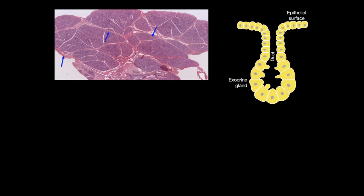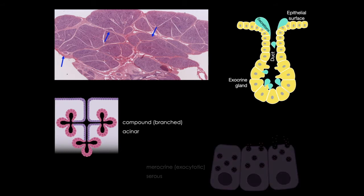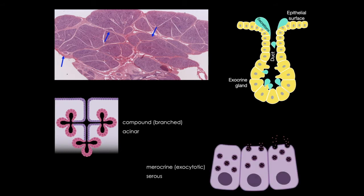They're both exocrine glands, in which every exocrine secretory cell has some portion of its plasma membrane that's exposed to an external surface, communicating with the outside of the body by a system of ducts. The pancreas and parotid glands are classified as compound or branched, alveolar or acinar glands, with a merocrine or exocytotic type of secretion.